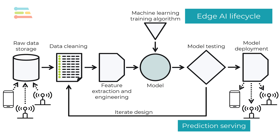The phrase prediction serving is mostly used in cloud machine learning where the model is configured to perform inference as a cloud-based service rather than on a local machine. So it may or may not directly apply to edge AI, but it's good to be aware of the term.